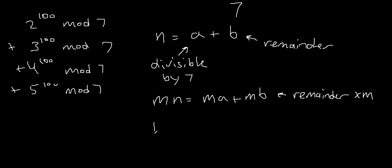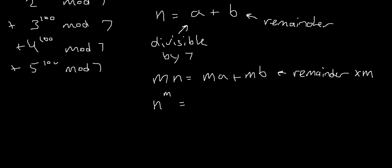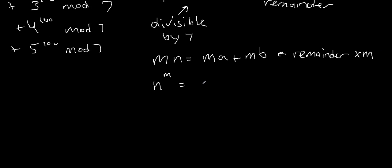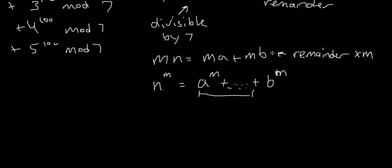And what if you take n to the power of m? Well, you can expand this out using the binomial theorem — you can look that up if you need help with that. It will be a to the power of m plus some middle terms, and the last term will be b to the power of m. All the other terms are divisible by 7 because they all contain a. So the remainder will be taken to the power of m.